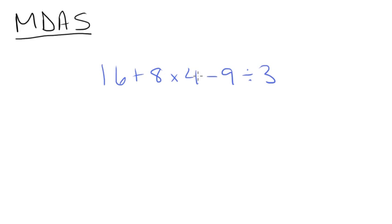So first we're going to multiply 8 by 4, which is 32. So we'll have 16 plus 32 minus 9 divided by 3. Then we're going to divide 9 by 3. 9 divided by 3 is 3. So we'll have 16 plus 32 minus 3.